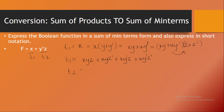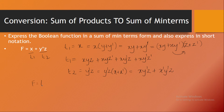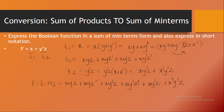Now let's take T2, which is y-dash z. Here only one variable is missing — x. So this can be replaced as y-dash z into (x plus x-dash). When I multiply inside, I get xy-dash z plus x-dash y-dash z. Now I add T1 and T2 together. The combined result is xyz plus xyz-dash plus xy-dash z plus xy-dash z plus x-dash y-dash z. Notice that xy-dash z appears twice, so we take one and cancel the other.